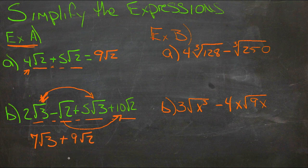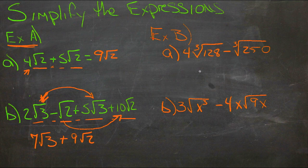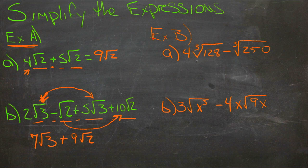Again, just combining like terms. Example B is just a little bit more complicated, just because we need to simplify the roots first. So what we're going to do is take 4 cube roots of 128 and subtract 3 cube roots of 250.